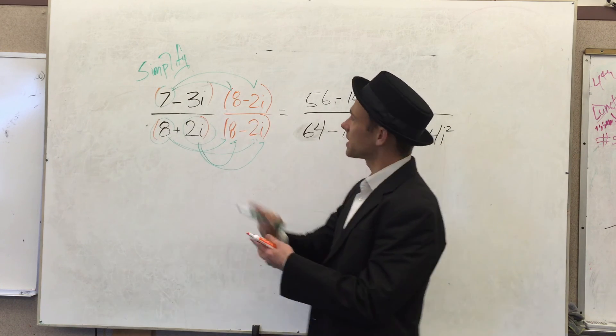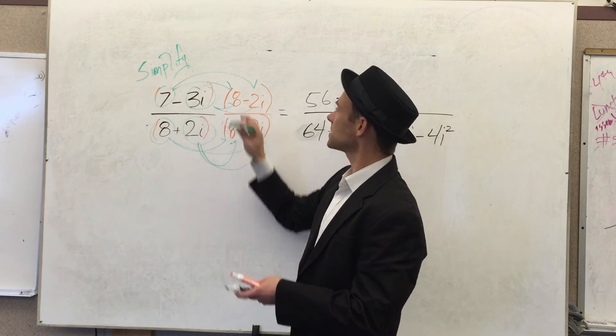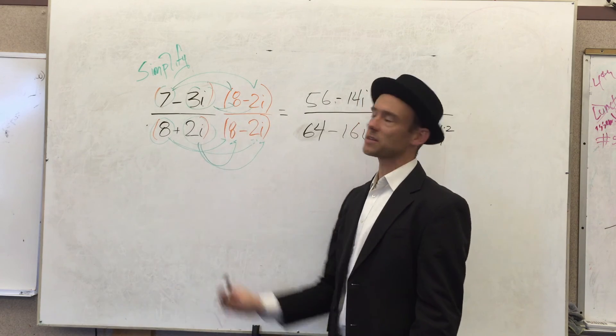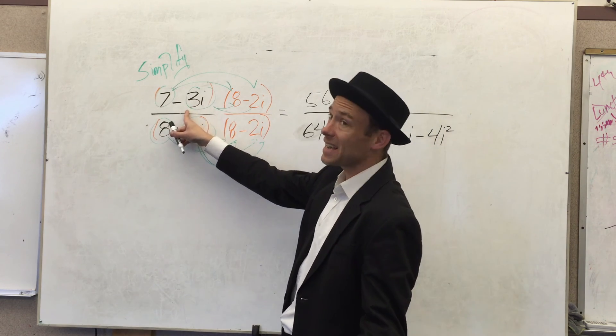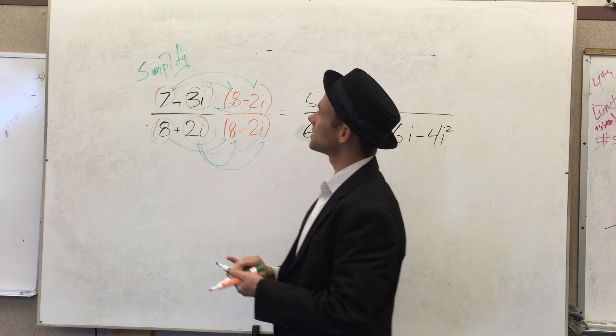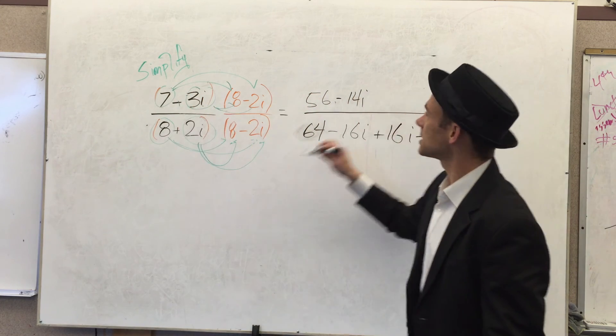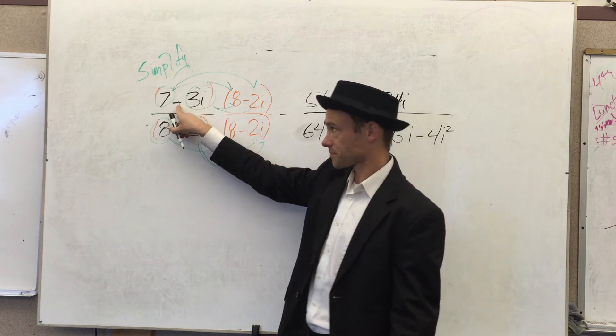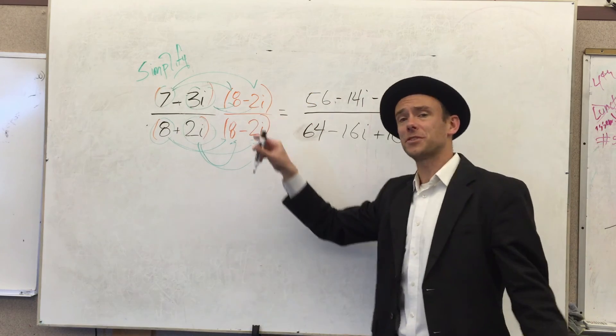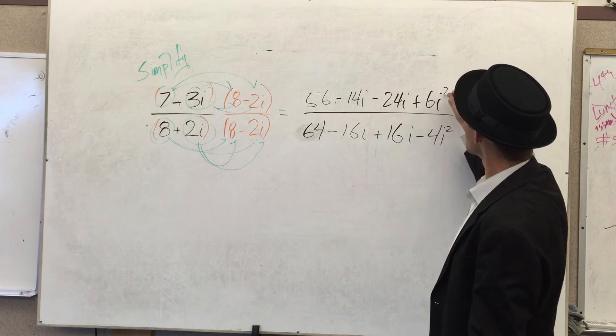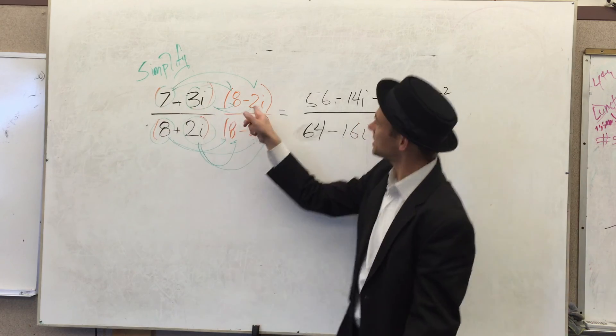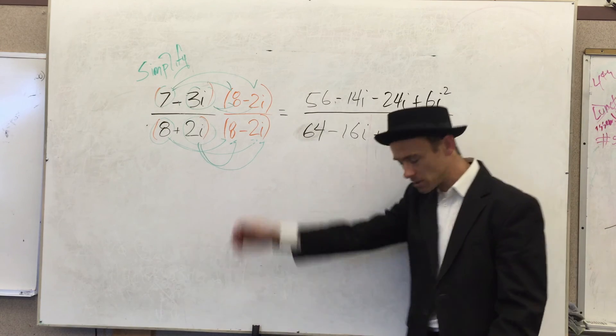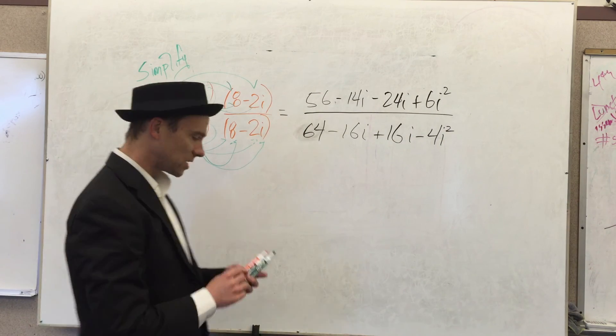7 times negative 2i is minus 14i. Now we're going to switch over. We got this term. 3 times 8 is 24. You want to consider that a minus 3, you can. So we got minus 3 times 8, it's going to give us minus 24i. And negative 3i times negative 2i is positive 6i squared, because a negative 3 times a negative 2 is a positive 6, and an i times an i is an i squared.